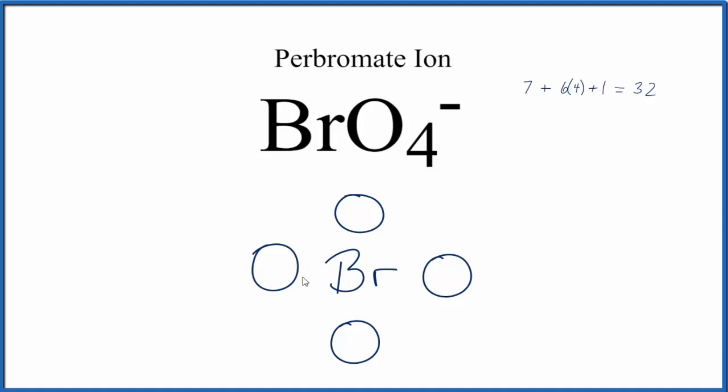Next, we'll place valence electrons between these atoms to form the chemical bonds. So we've used 8 out of our 32 valence electrons.